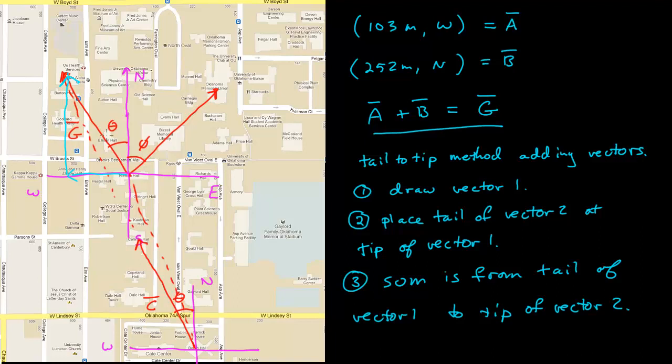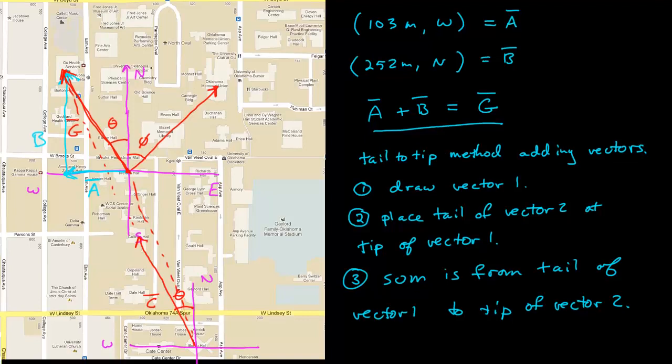You can see, since I can translate this across, here's vector 1, this is vector A. We had the tail of vector B at the tip of vector A. And that goes to here. And then the resulting vector goes from the tail of vector A to the tip of vector B.